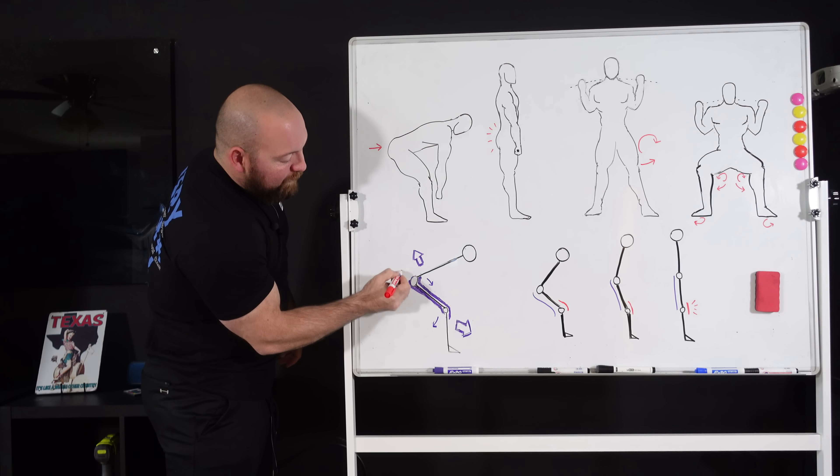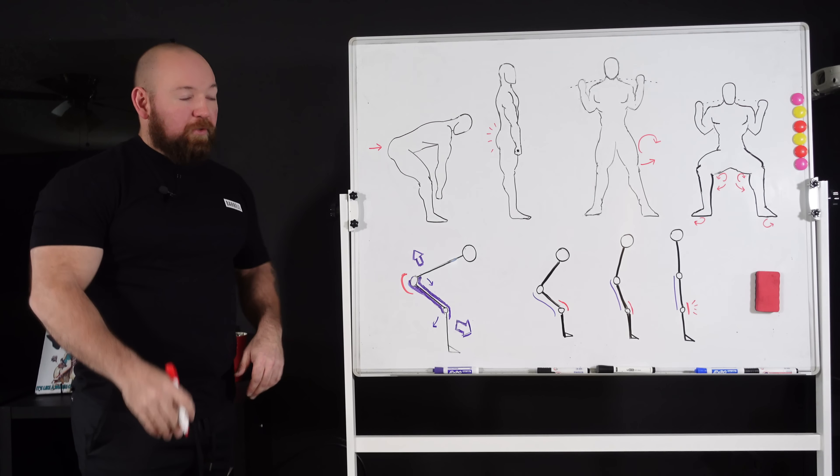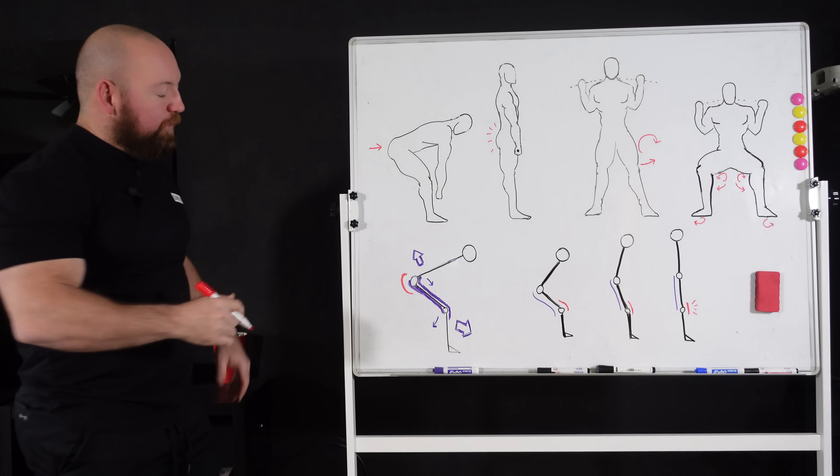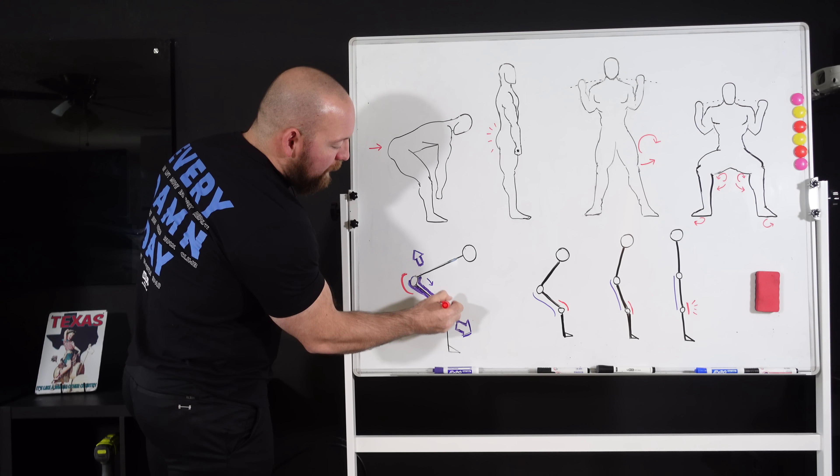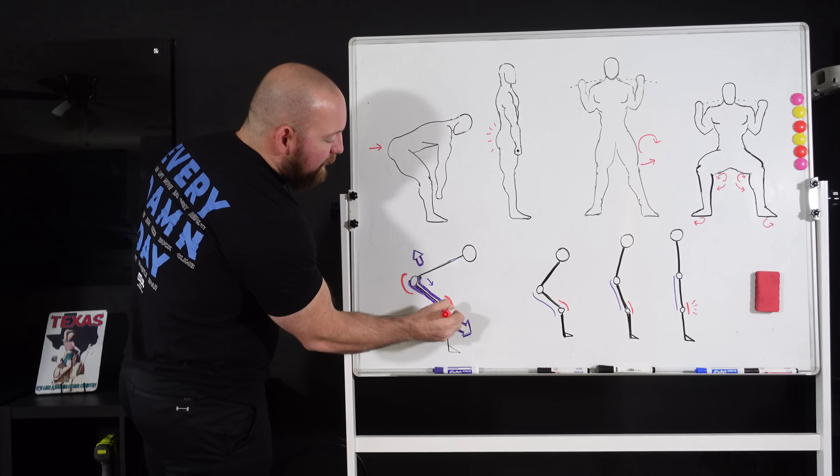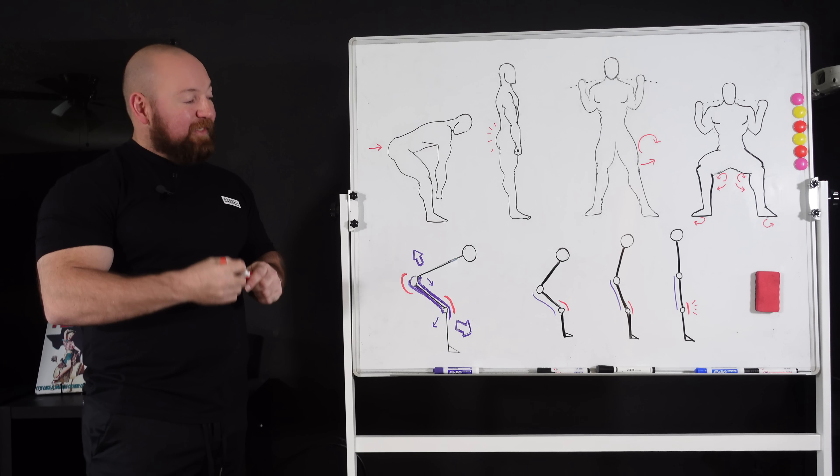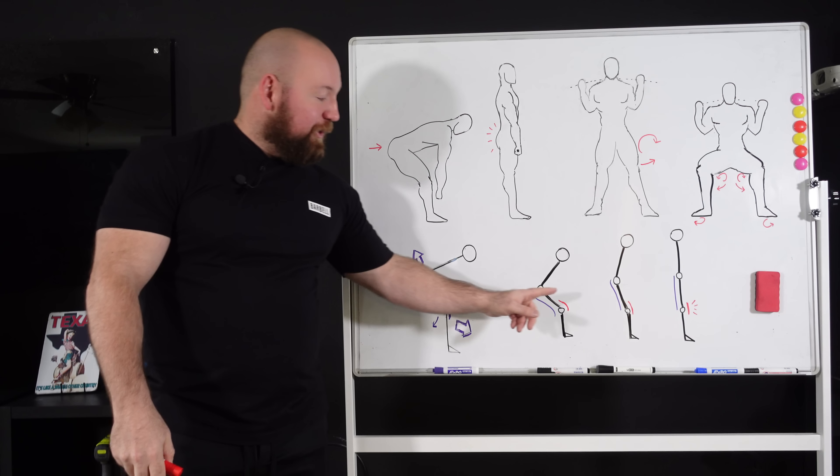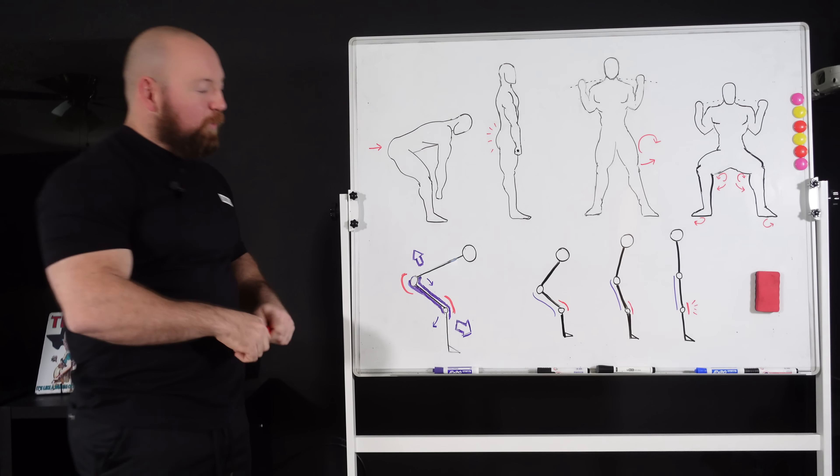So in addition to the hamstrings involved in hip extension, we also have the glutes, single joint muscle, pure hip extension. That's all the glutes do. Similarly, most of the muscles in the quadriceps are single joints, just the rectus femoris that goes over both joints that just involves itself with knee extension. Now, if we consider the relationship between a single joint muscle and its two joint antagonist, this is where the weird stuff happens.